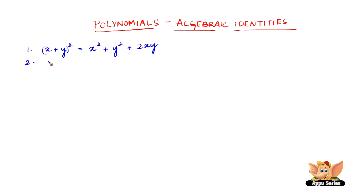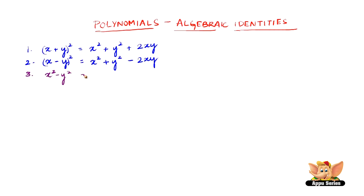Identity 2 is (x minus y) whole squared equals x squared plus y squared minus 2xy. Identity 3 is x squared minus y squared equals (x + y) into (x minus y).